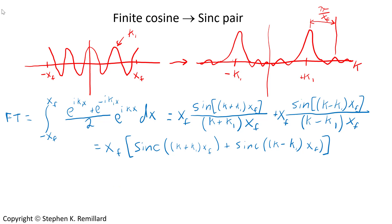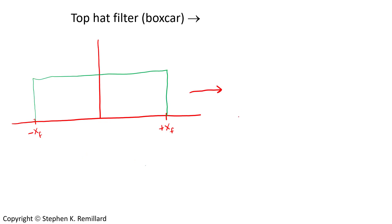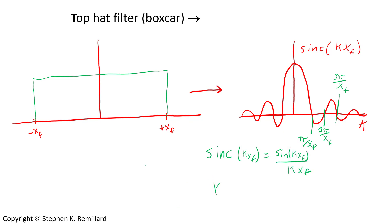If a finite cosine pulse gives you a pair of sinc functions — where the location of each sinc depends on the wavelength of oscillation of the cosine, and the separation between the peaks in the sinc depends on the overall length of the wavetrain — you can surmise what happens if you take away the oscillation and just have a boxcar filter. In that case, what changes is the location of the sinc: those two sinc functions in the pair come together at the origin in k-space to give one single sinc. The values of k for the zeros are multiples of pi over the width of the sinc function. This is the way the diffraction pattern of an aperture in optics is described.